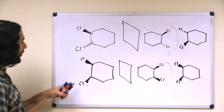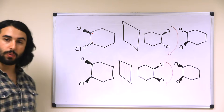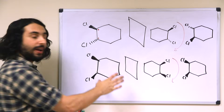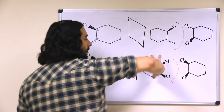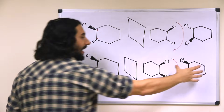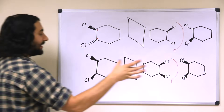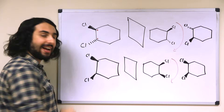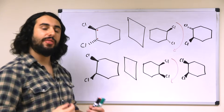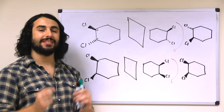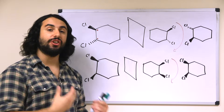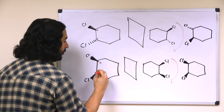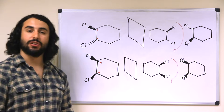But what if we do something as simple as changing this dash to a wedge? Now if we reflect across the mirror plane and turn it 180 degrees, we find that it is flawlessly superposable — the mirror image is identical to the original. Therefore by definition this molecule is achiral, or not chiral.